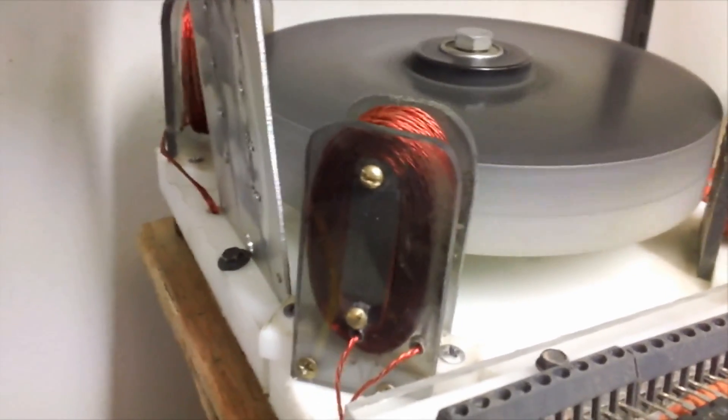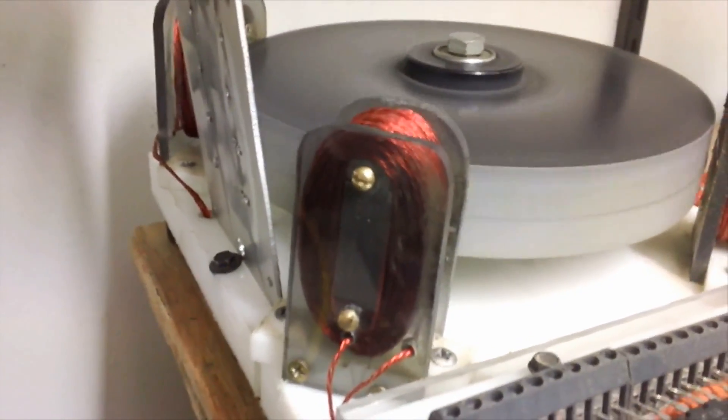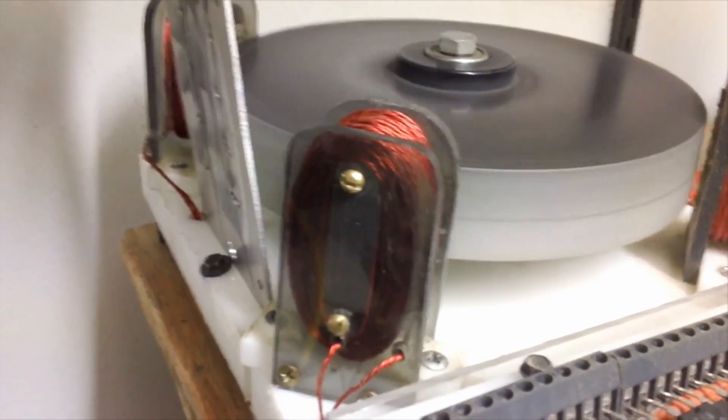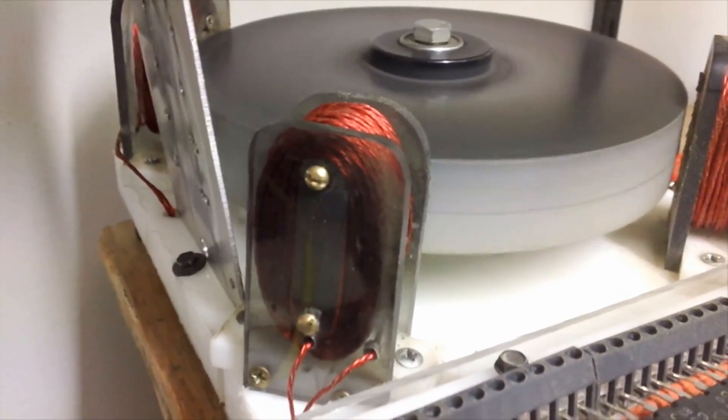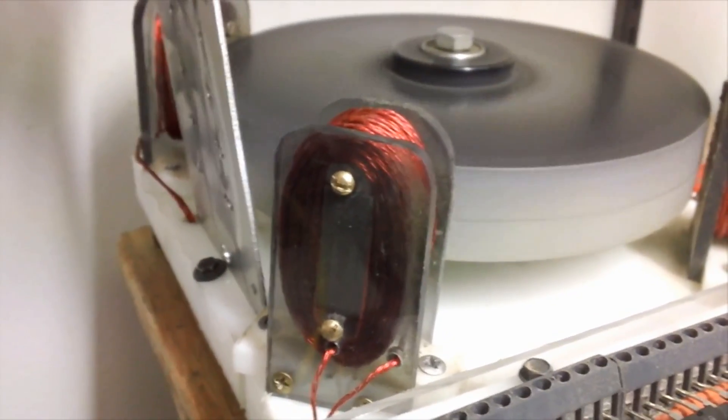That means that the wheel has an electromagnet against it. And it's basically acting as a brake. Even though it's an electromagnet. Here I'm going to move this.